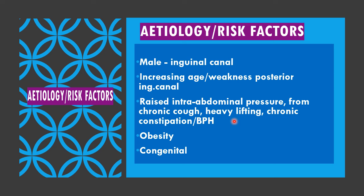The etiology and risk factors for inguinal hernia: males have a higher risk of developing hernia than females because of the testicular descent pathway. Increasing age results in weakness of the posterior inguinal canal. Raised intra-abdominal pressure from chronic cough, heavy lifting, chronic constipation, and benign prostatic hyperplasia are important risk factors. Obesity and congenital causes are also relevant, especially in younger patients and children.